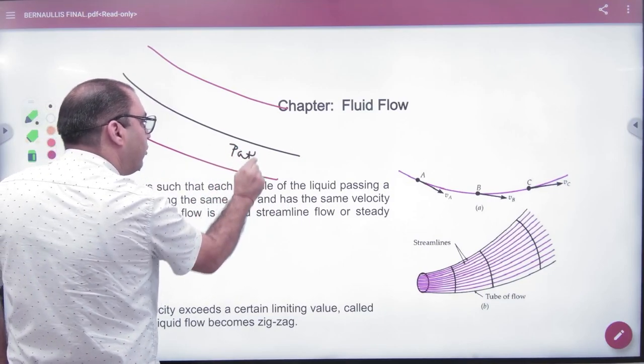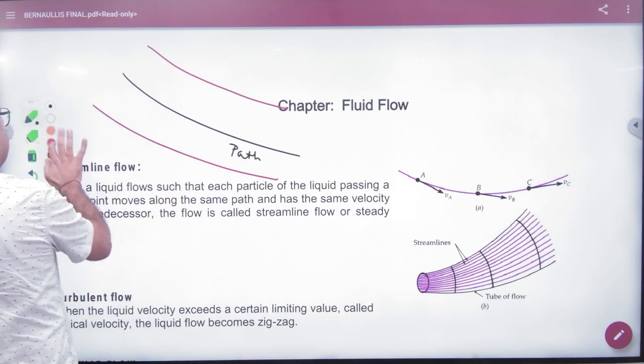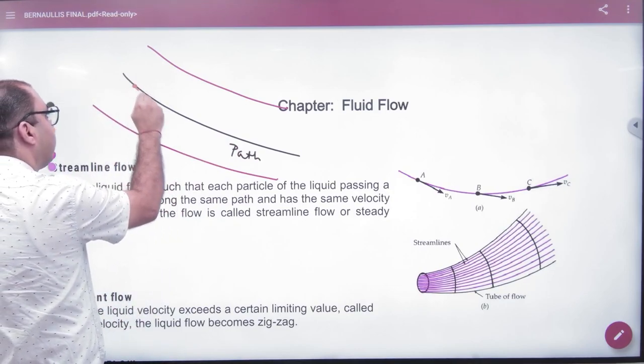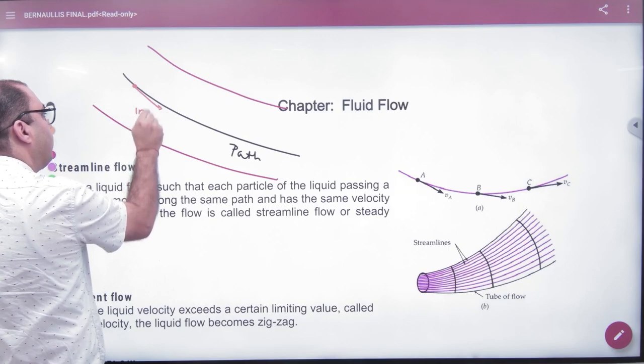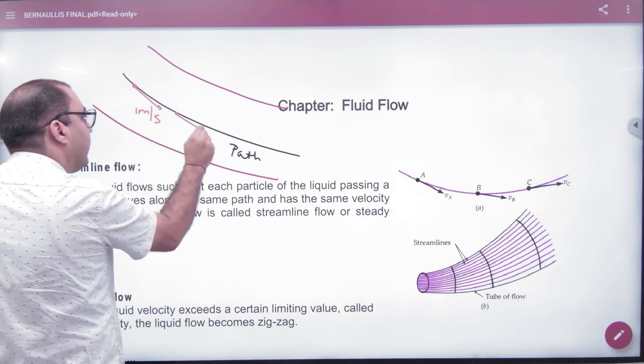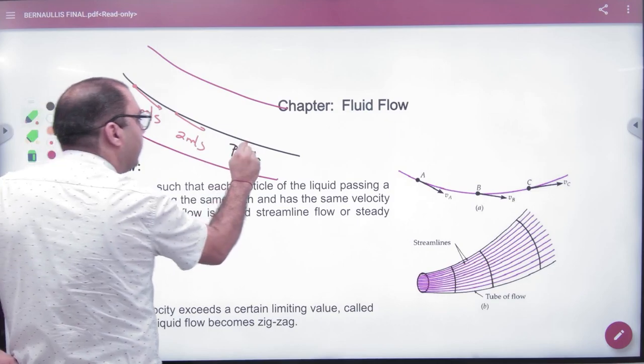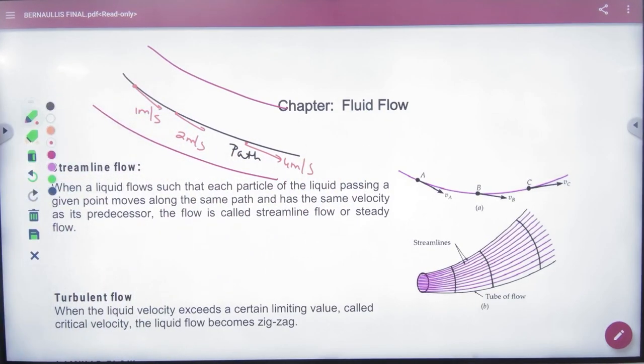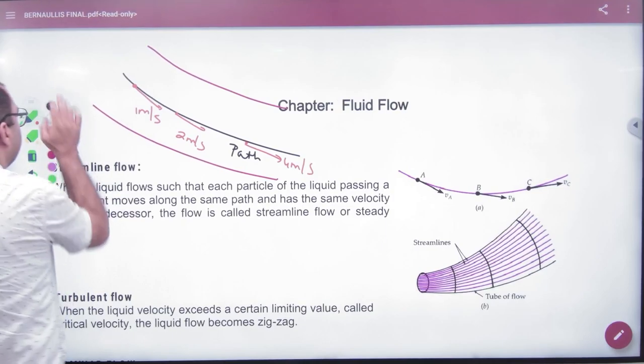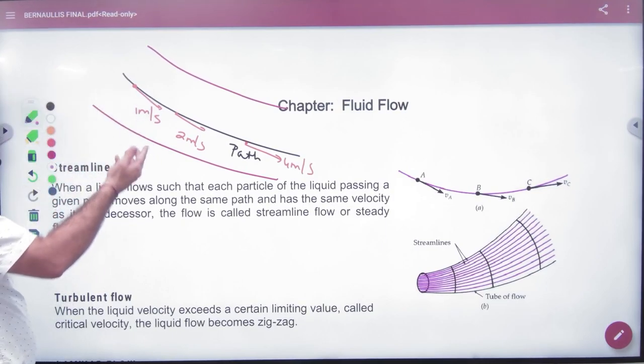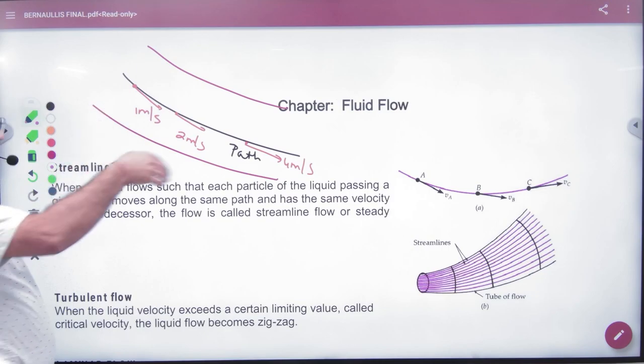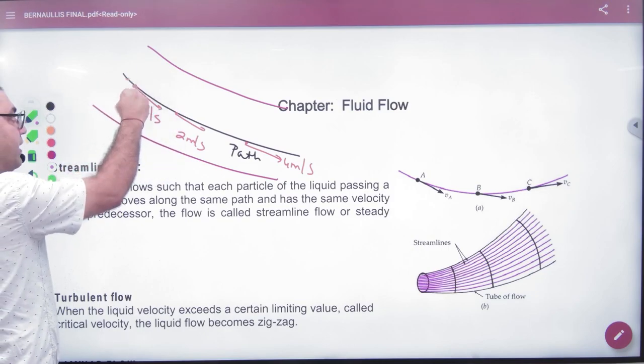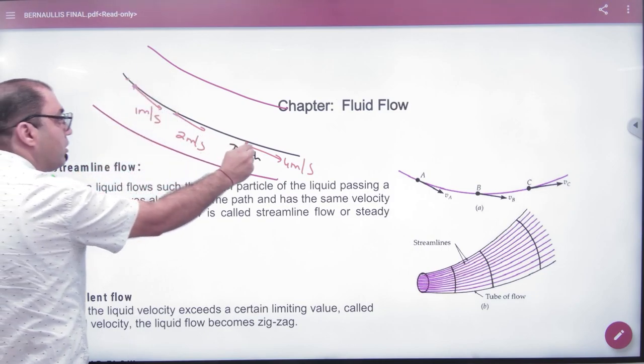Such that the liquid particle's velocity is 1 meter per second, in the next instant is 2 meter per second, in the next instant is 4 meter per second and so on. So in this case, the next particle, the preceding particle which will immediately be behind it, will follow this path.